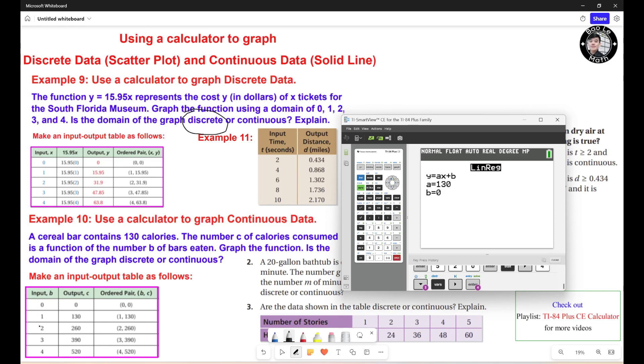Because the input right here, this is the number of bars. You can eat one half, you can eat one third bars. So the domain should be continuous. The number should be continuous.